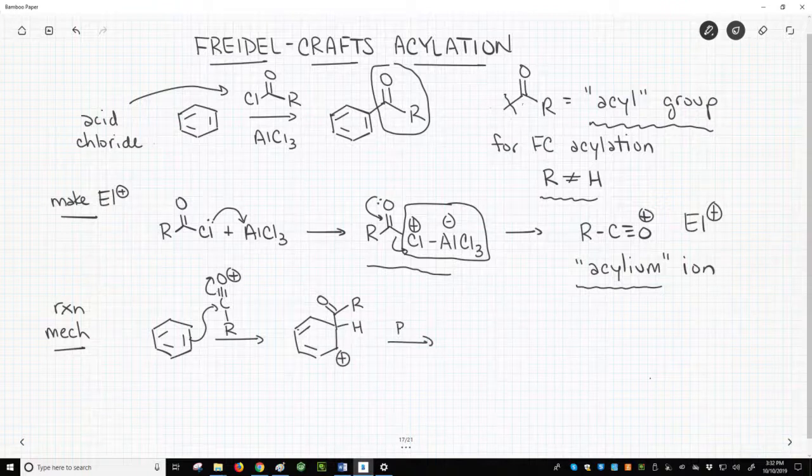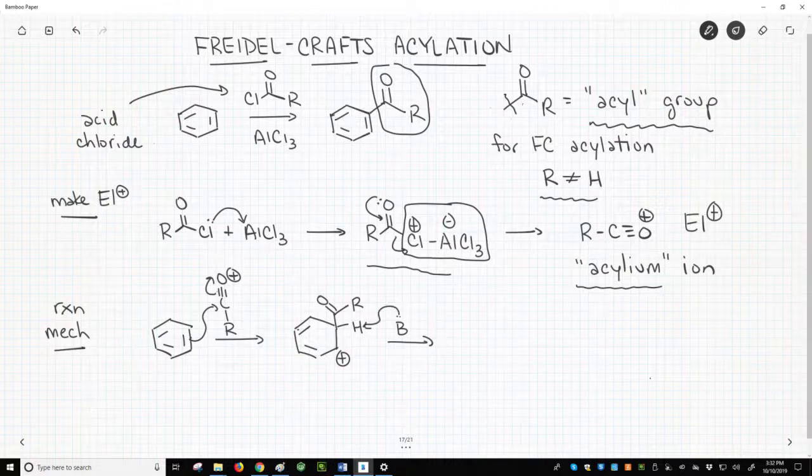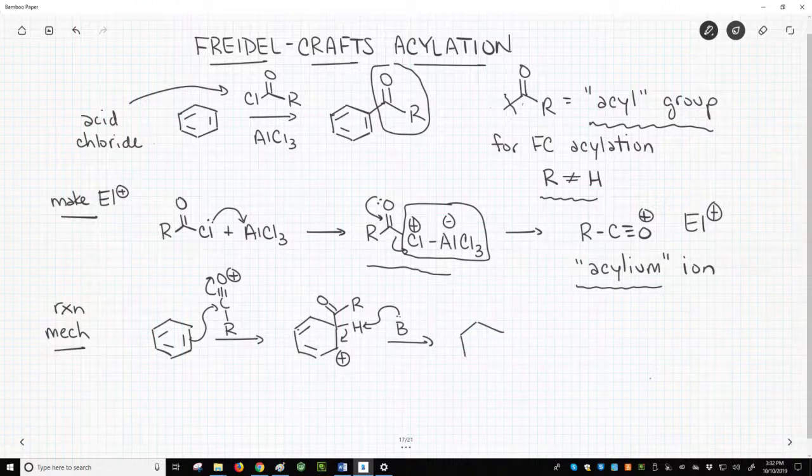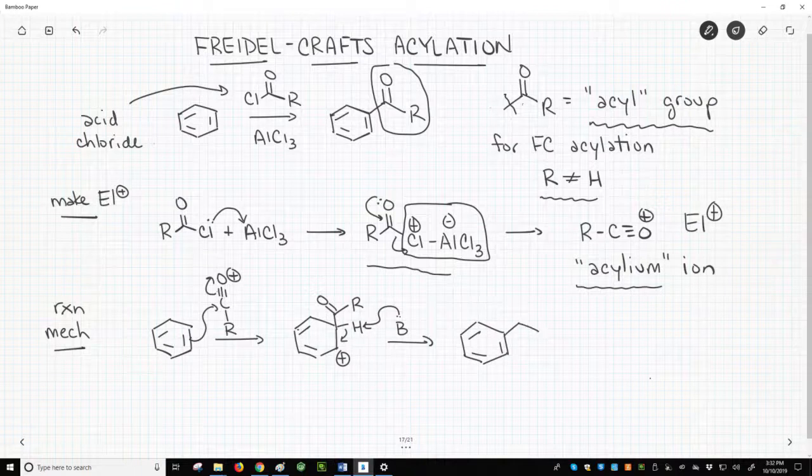A base in the reaction, B, removes the hydrogen beta to the carbocation to restore aromaticity in our final acylated product.